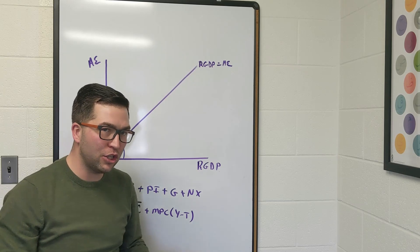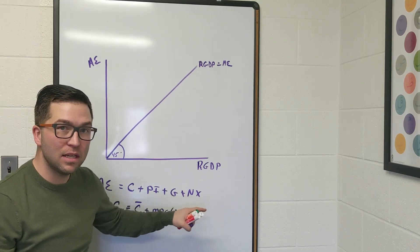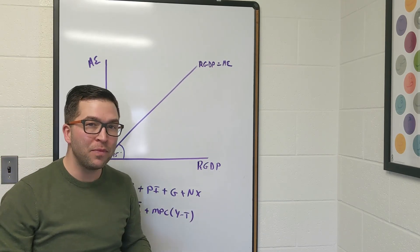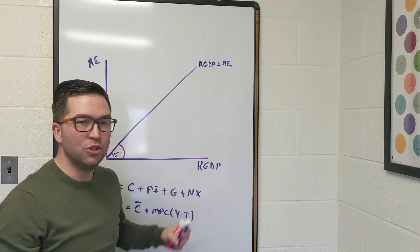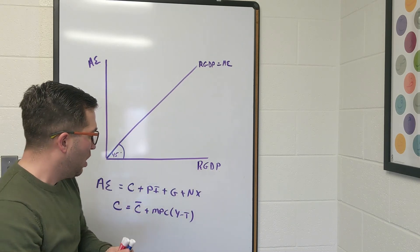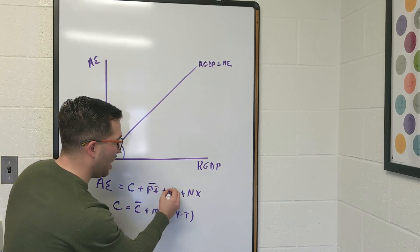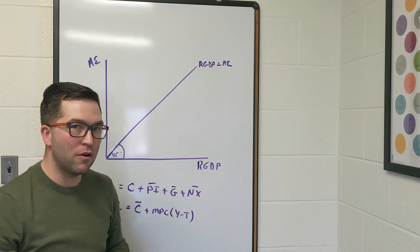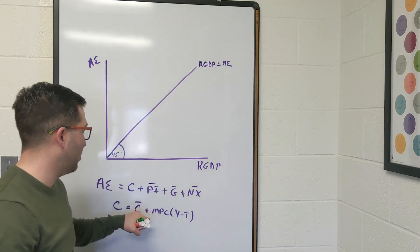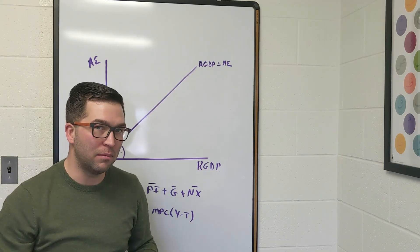So aggregate expenditure is going to depend on all of these, but we're going to make the assumption that consumption is the only one that really depends on real GDP and changes. All of these then are just going to be numbers. We'll put a line over them to show that they're just a number and they do not depend on GDP, just like we have autonomous consumption.